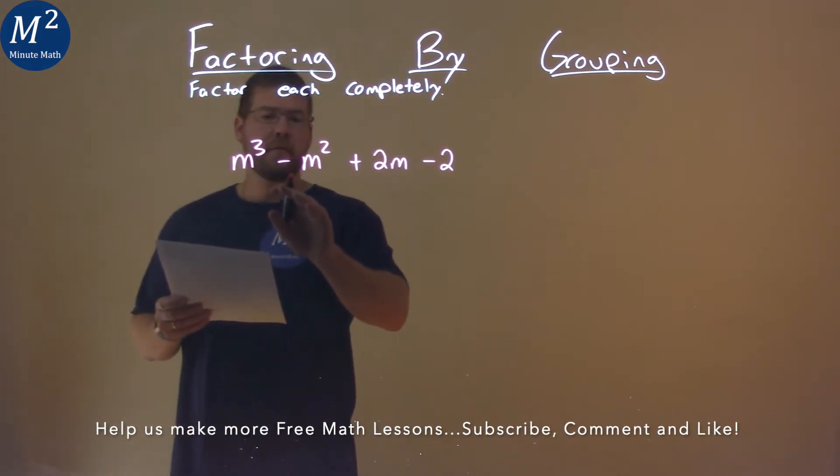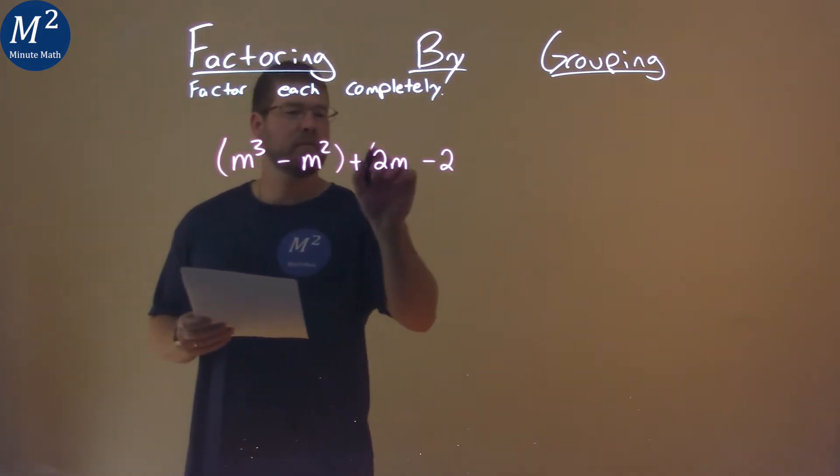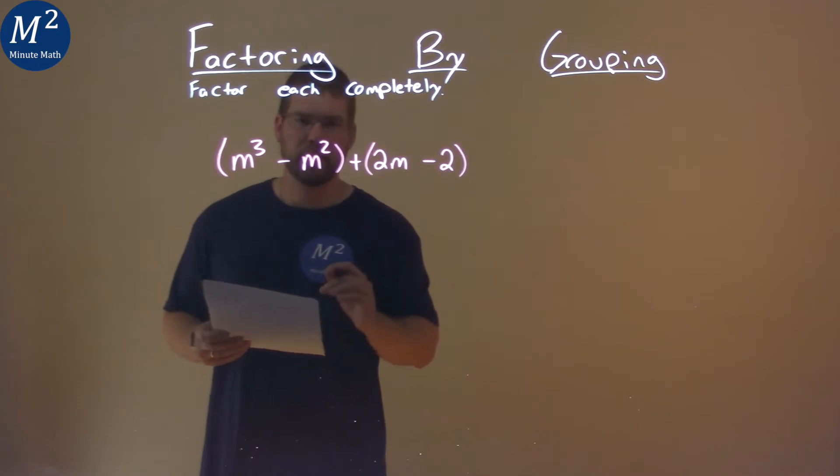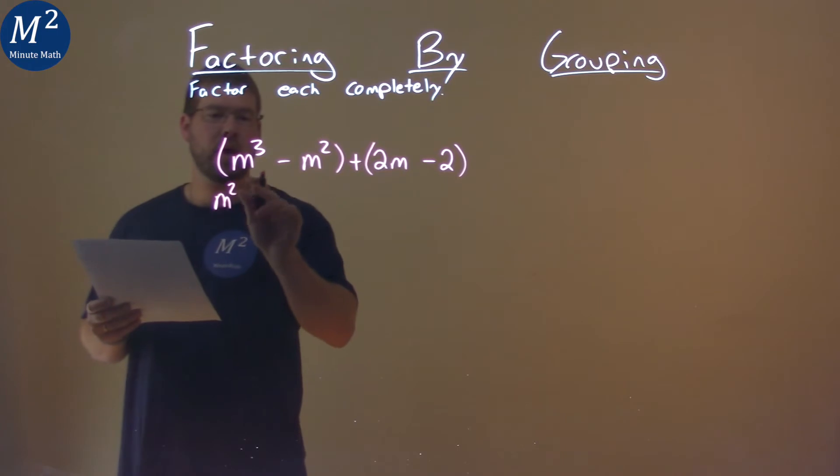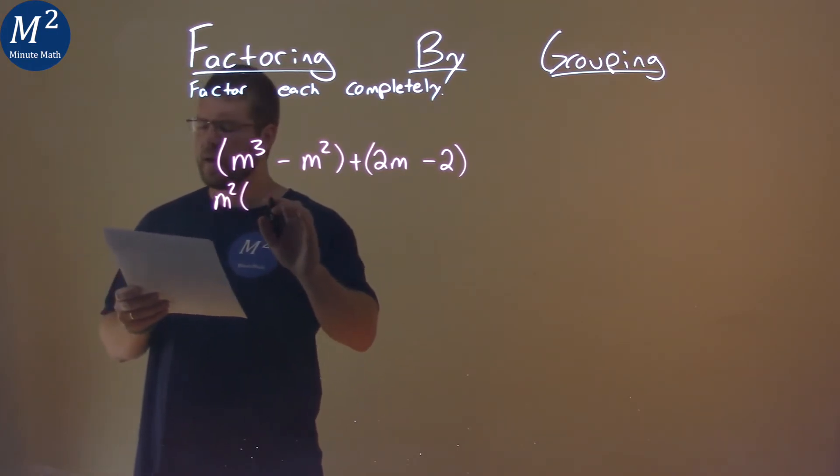What I'm going to do is group the first two terms and the second two terms together. I'm going to find a common term in the first part, which is an m squared. m squared is in both parts, so if I pull that out, I'm left with an m minus 1 here.